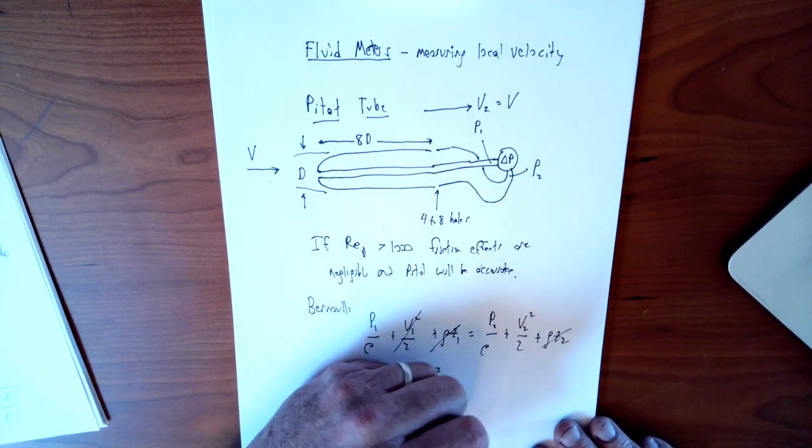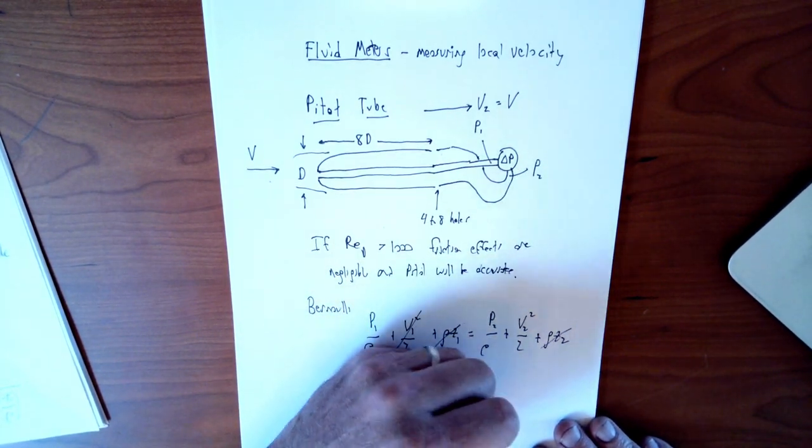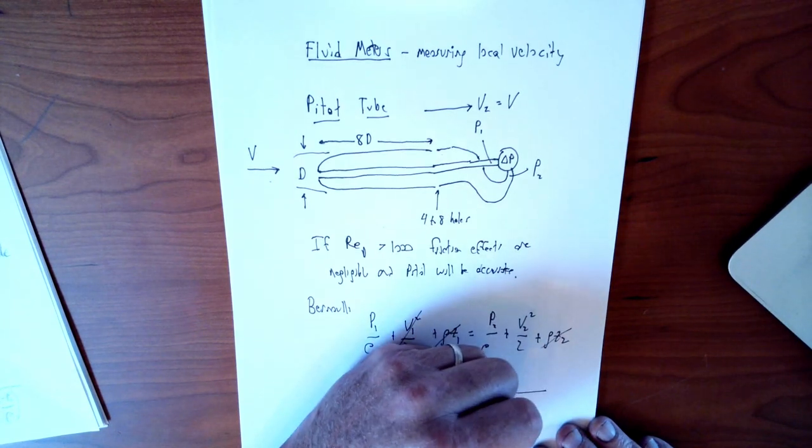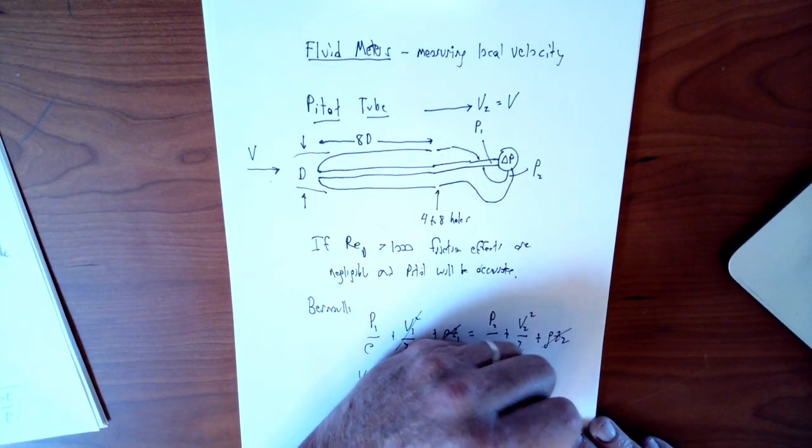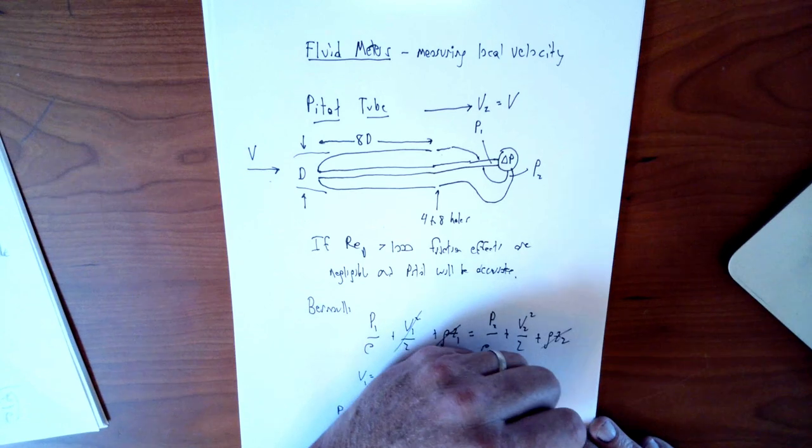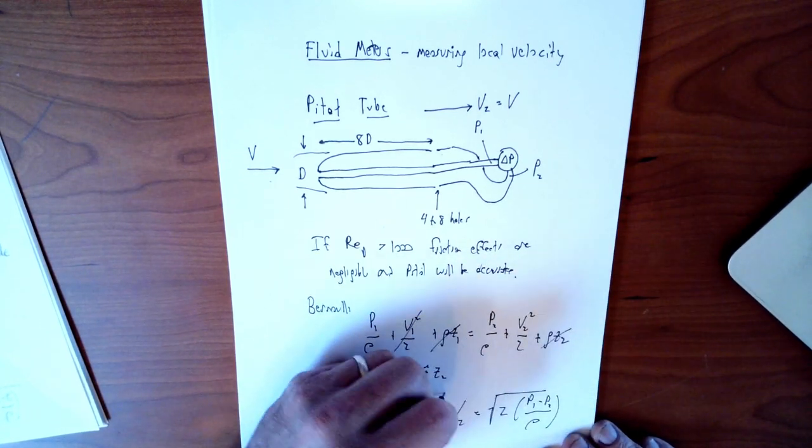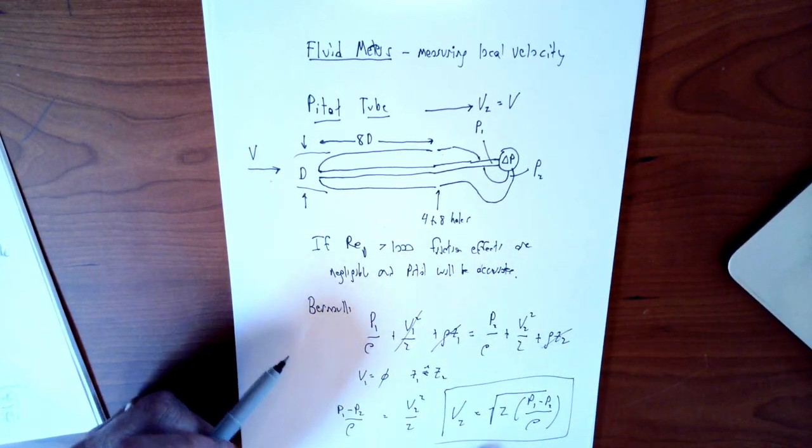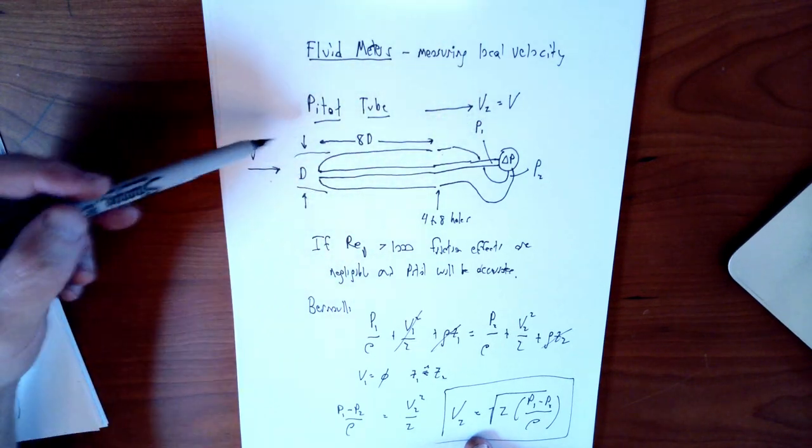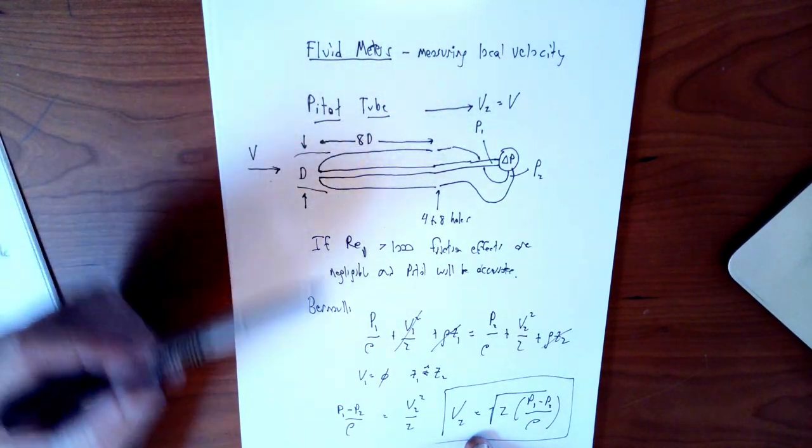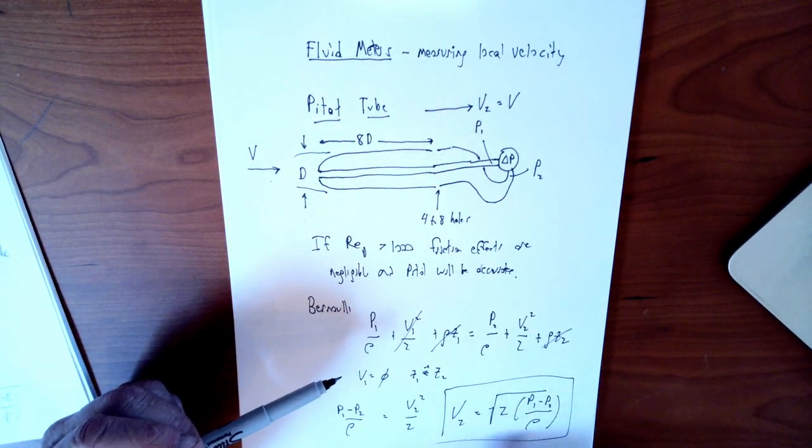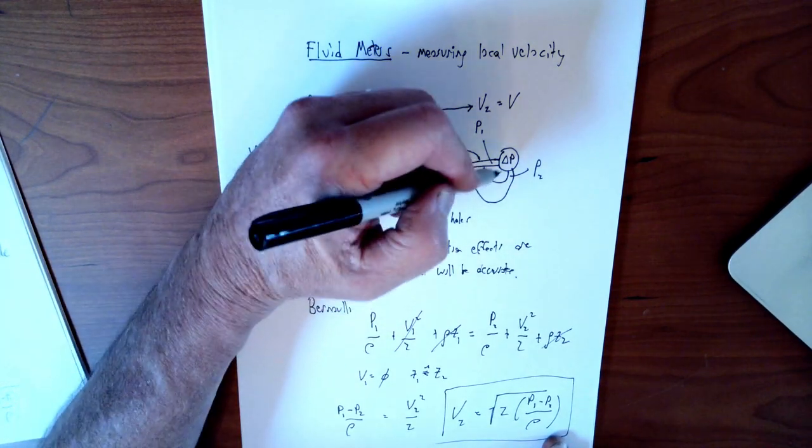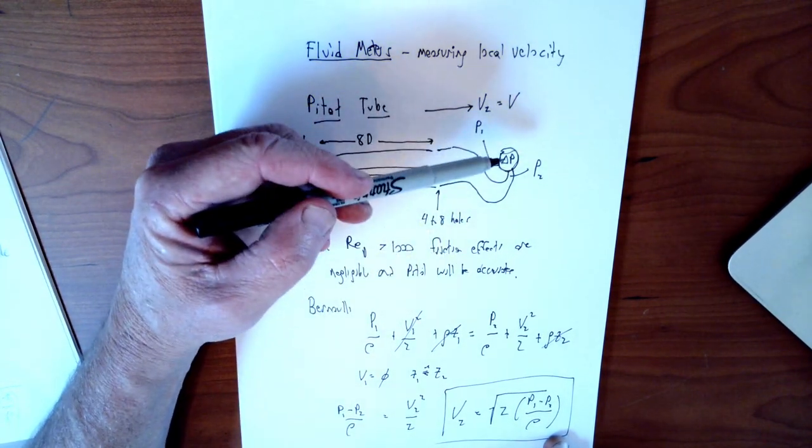And that leads to the equation that you already know that you can calculate the velocity of the flow. It's the square root of 2 times this pressure difference, P1 minus P2 divided by the density. That's the way you would find V2, and V2 of course represents the free stream velocity. You're measuring that delta P right here with your pressure gauge.